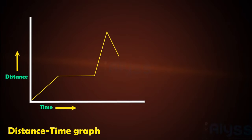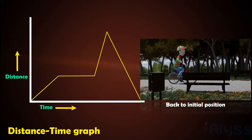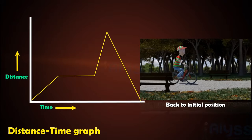And if the graph is sloping down, it means the object is coming back to its initial position.